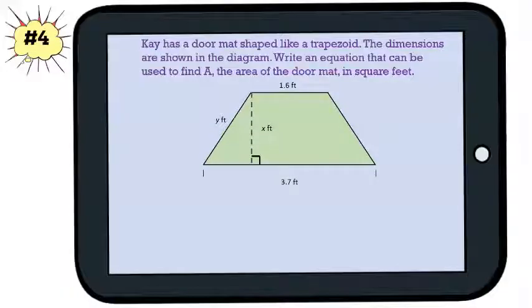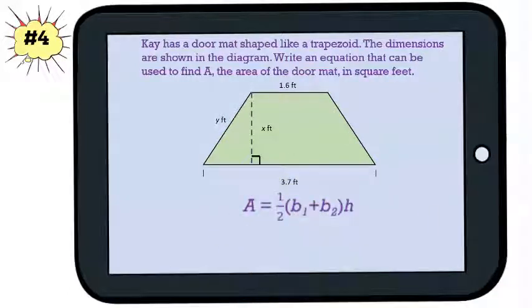Let's try another problem together. K has a doormat shaped like a trapezoid. The dimensions are shown in the diagram. Write an equation that can be used to find A, the area of the doormat, in square feet.